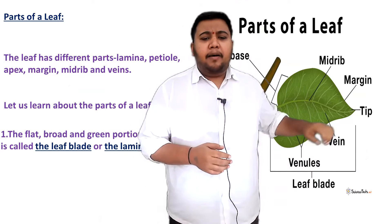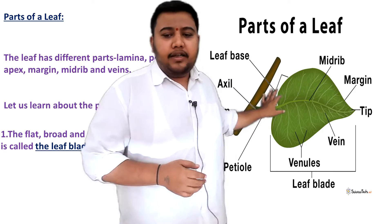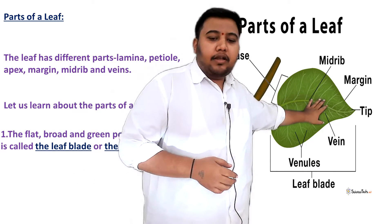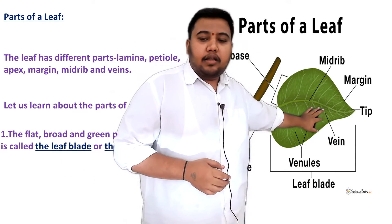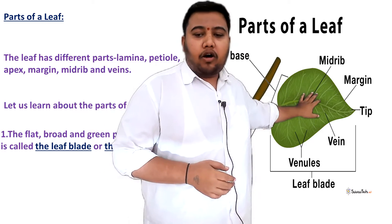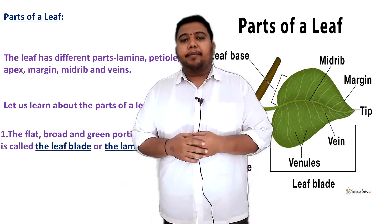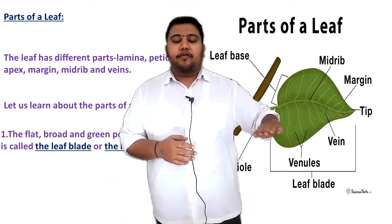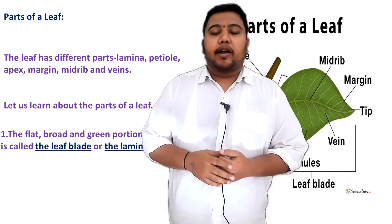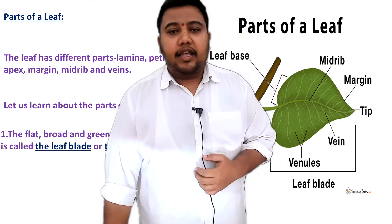The flat, broadened surface of the green leaf is called the leaf blade, or it is also called lamina. The flat green surface in the center of the leaf is referred to as the lamina or leaf blade.